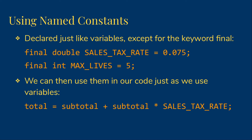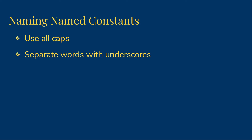Once we've declared the constants, then we use them in our code just as we use variables. So here I have: total is assigned subtotal plus subtotal times SALES_TAX_RATE. You can see the sales tax rate looks just like it would if it were a variable, except for the naming convention. The conventions for naming constants help us distinguish them from variables in our code. We use all caps, as you can see in my examples, and then we separate the words with underscores.